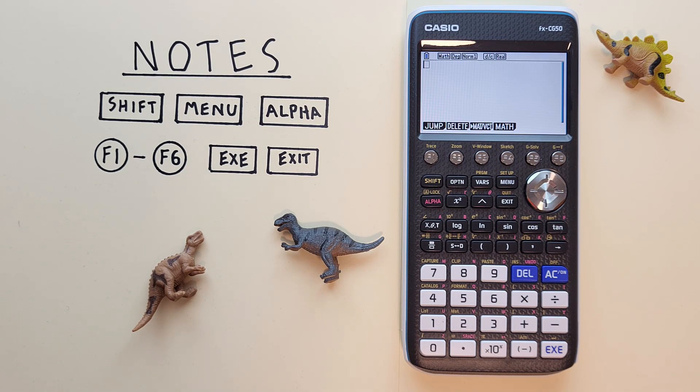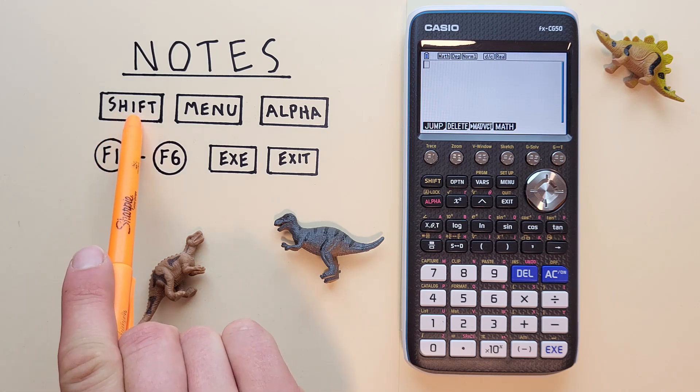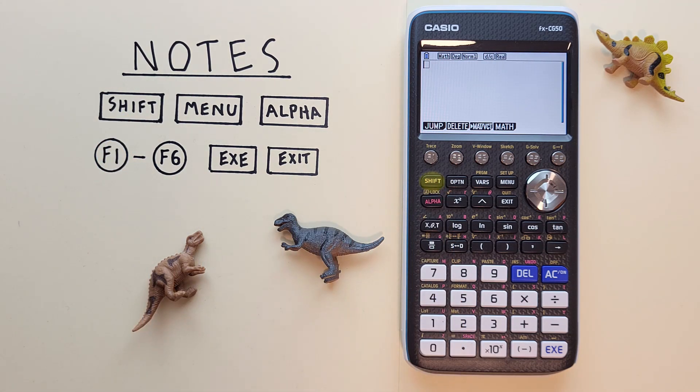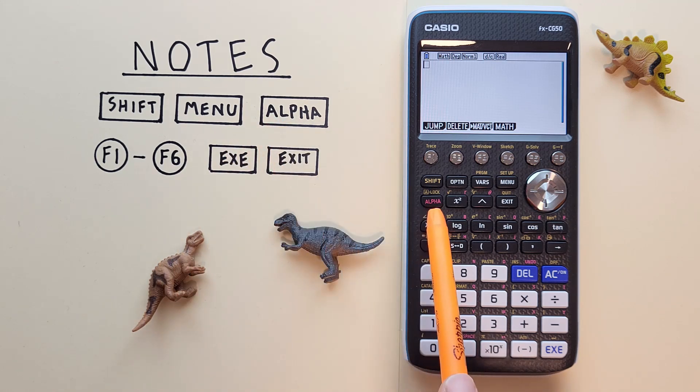To do this we'll use the shift key that looks like this located here, the menu key that looks like this located here, and the alpha key that looks like this located here.